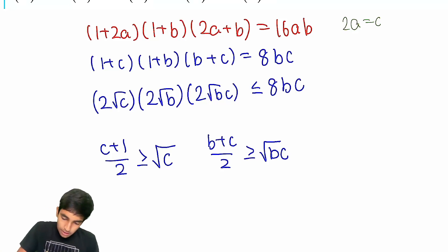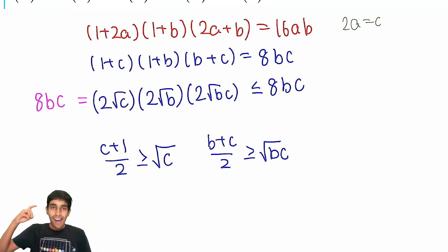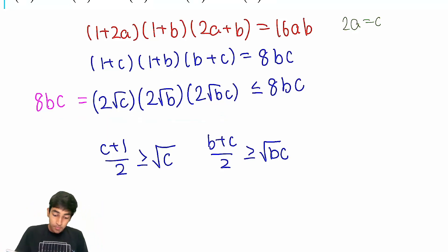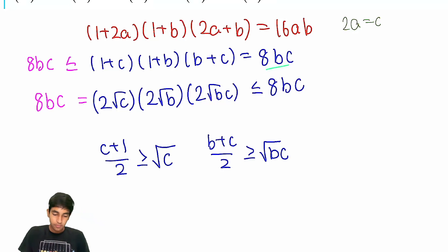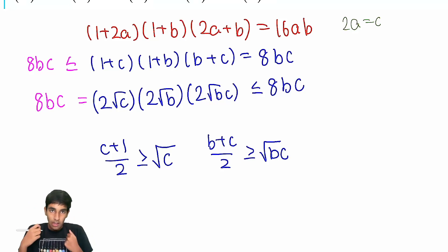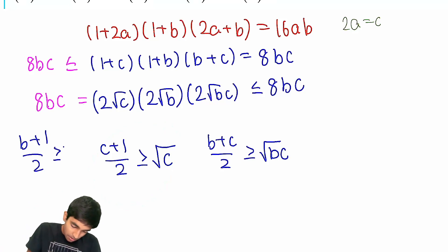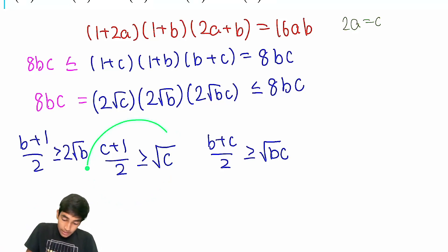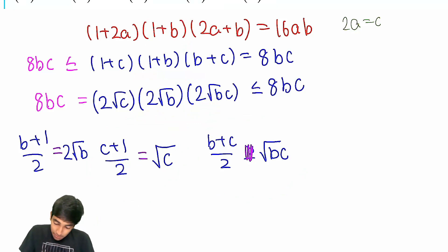So we have (1 + c)(1 + b)(b + c) ≥ 8bc, but our equation says this product equals 8bc. So 8bc ≤ (1 + c)(1 + b)(b + c) = 8bc. The only way this less-than-or-equal-to holds with equality is if it actually is an equality. So the equality case of AM-GM must hold for all three inequalities.